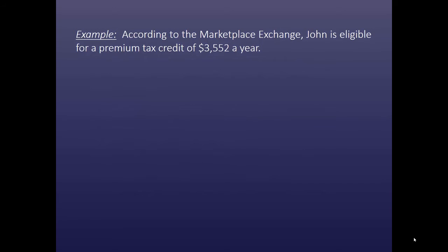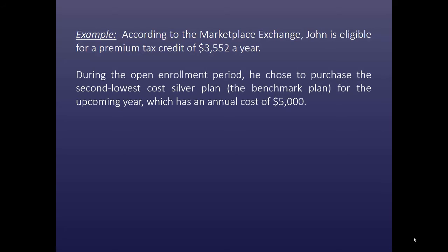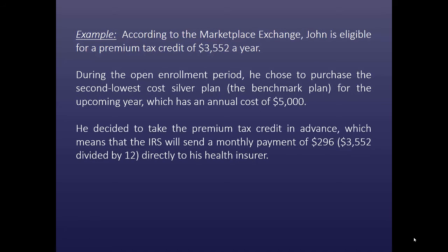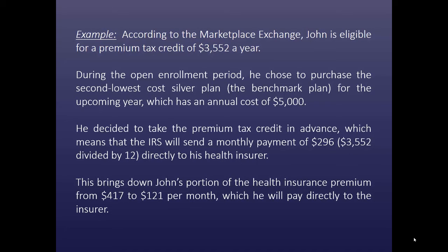For example, according to the marketplace exchange, John is eligible for a premium tax credit of $3,552 per year. During the open enrollment period, he chose to purchase the second lowest cost silver plan, which is the benchmark plan, for the upcoming year. This has an annual cost of $5,000. He decided to take the premium tax credit in advance, which means that the IRS will send a monthly payment of $296 — that's $3,552 divided by 12 — directly to his health insurer. This brings down John's portion of the health insurance premium from $417 to $121 per month, which he will then pay directly to the health insurer.